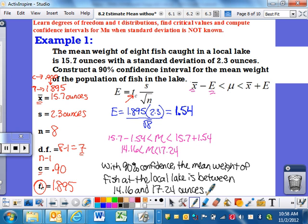First thing, the very first thing I want you to do, with what kind of confidence? With 90% confidence. And then what are we talking about? What are we trying to find? The mean weight of the fish at the local lake is between, and then you need to tell me your answer. Between 14.16 and 17.24 ounces.